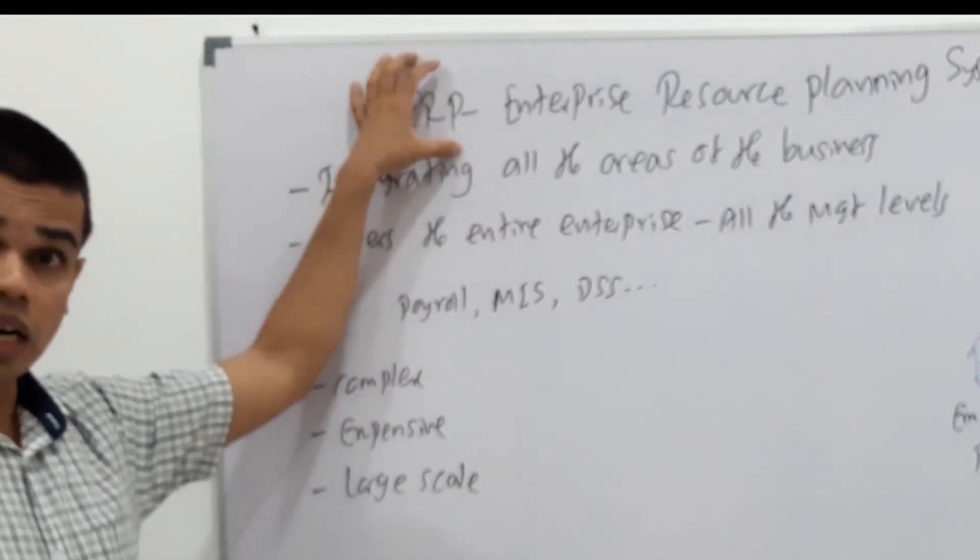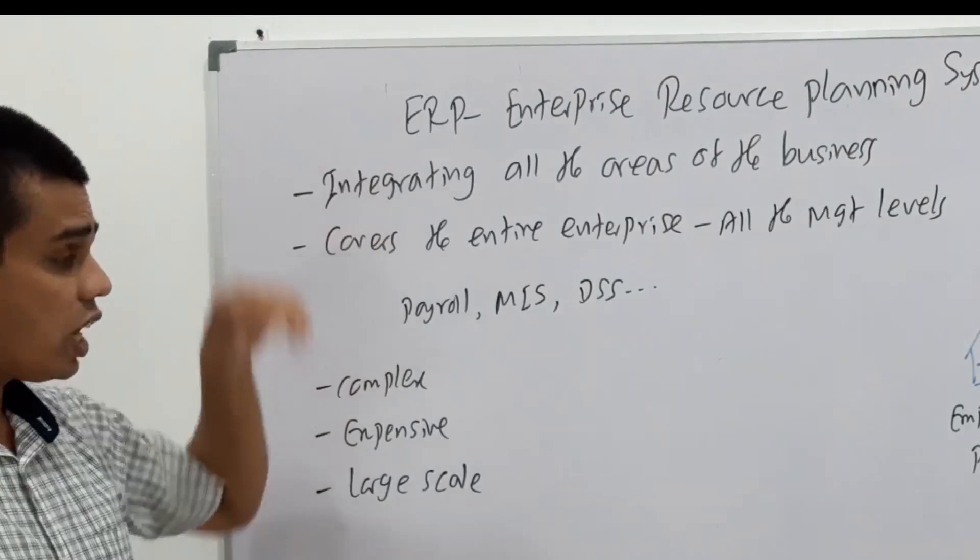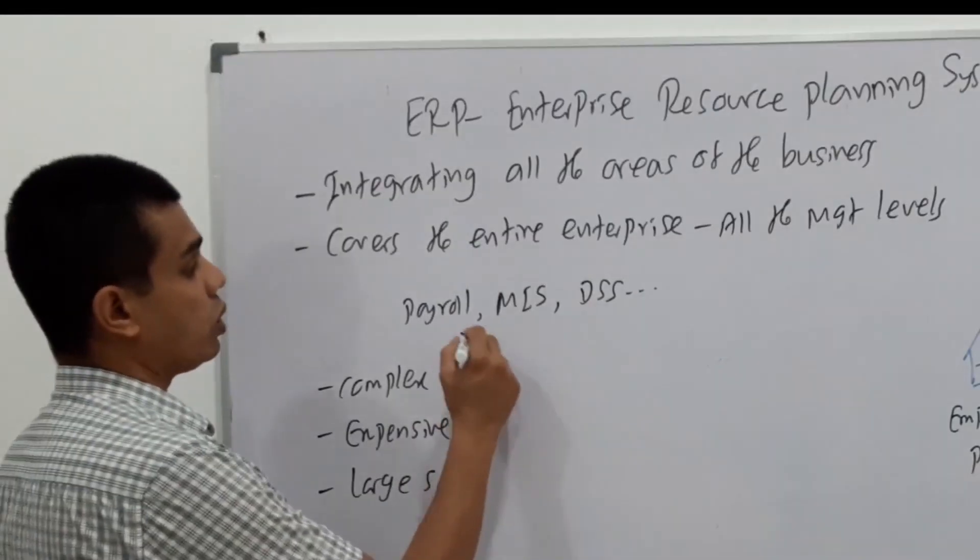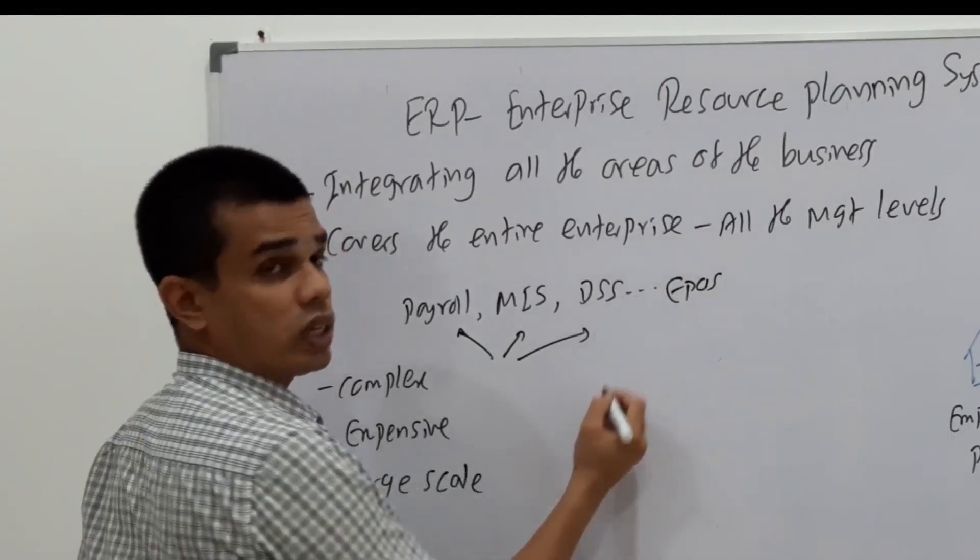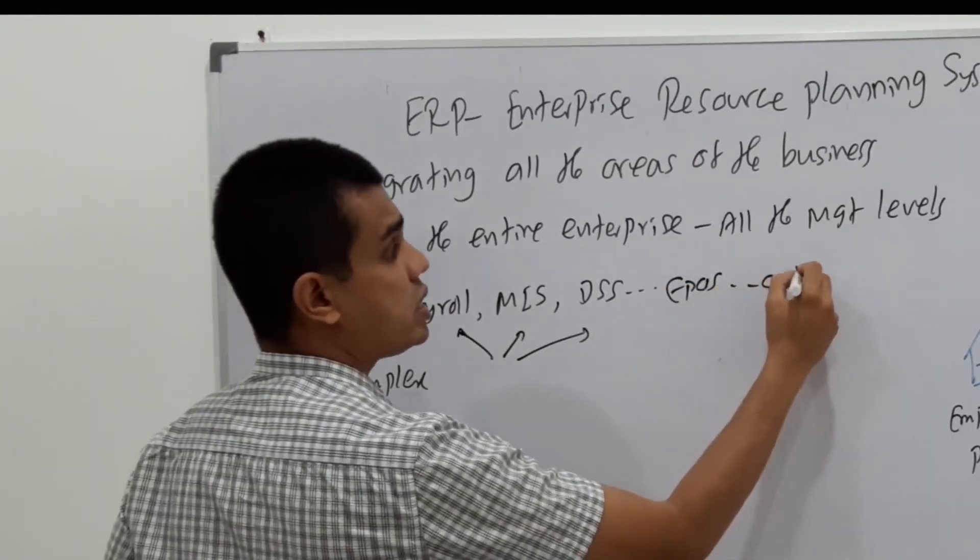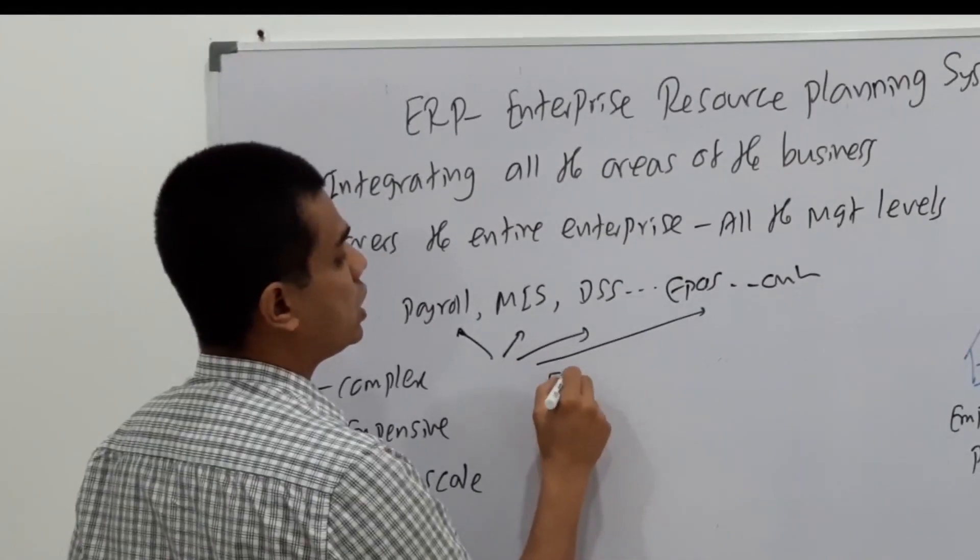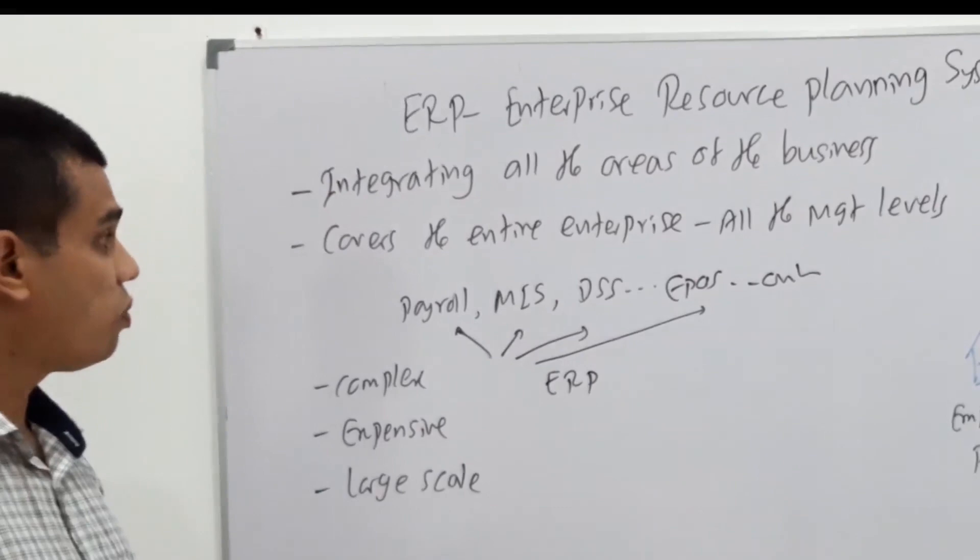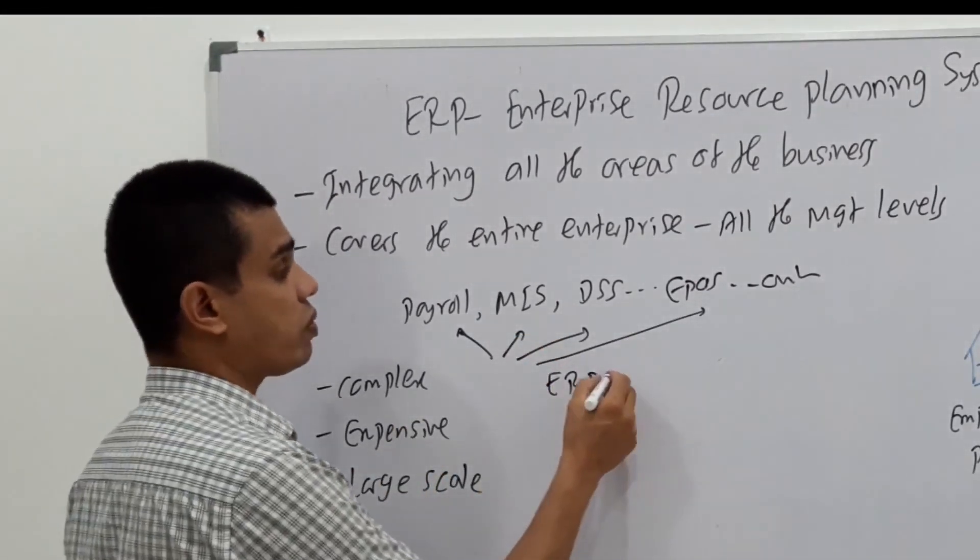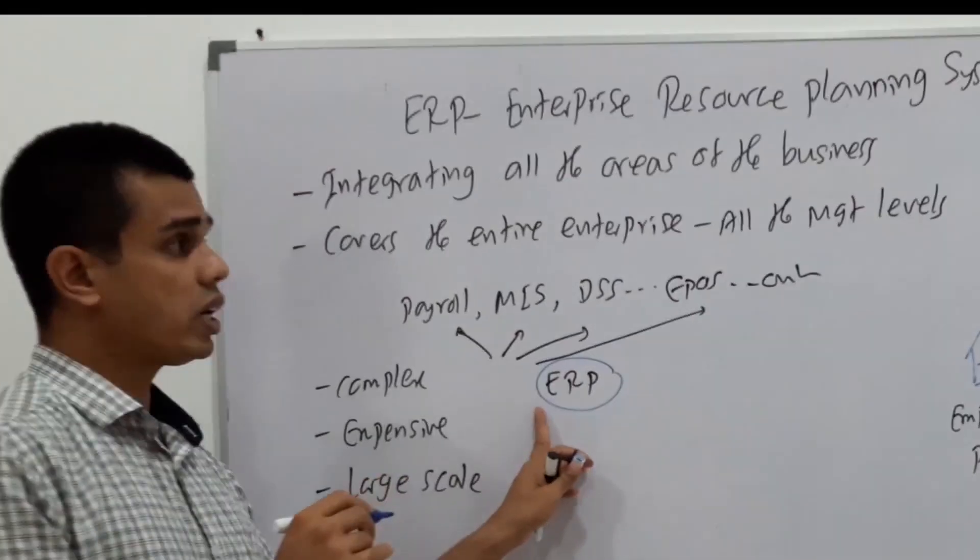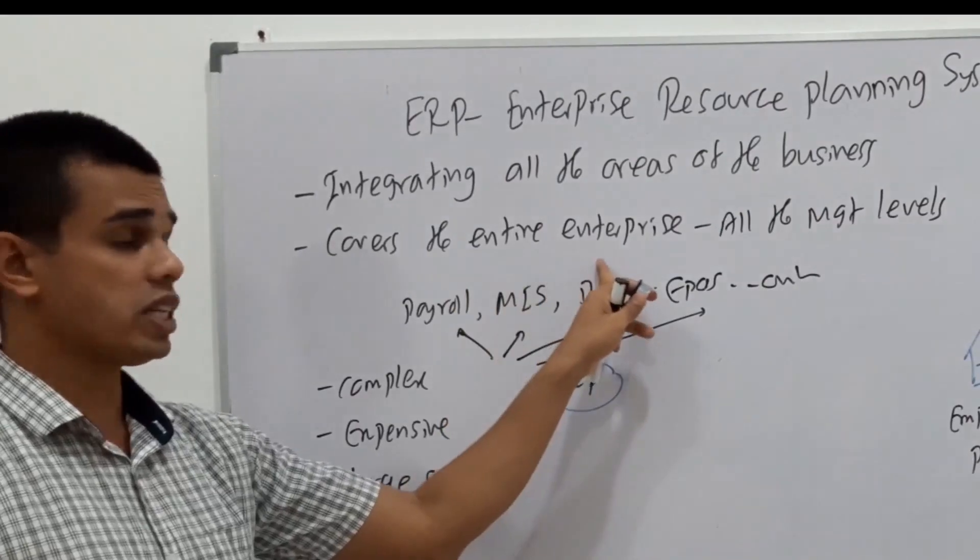Under the ERP, we have integrated packages. The ERP is with the payroll. It is with MIS, DSS. If we have EPOS, they are also into that. And some other online systems. All of them are combined into the ERP solution. You understand why this is complex? ERP is a single software package which is covering the full organization. It has the payroll package, MIS package, DSS.